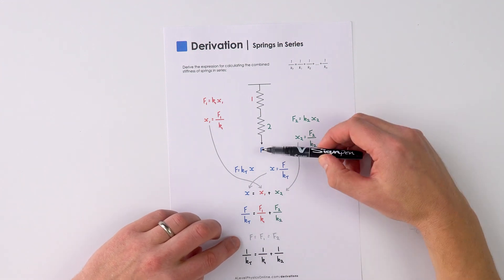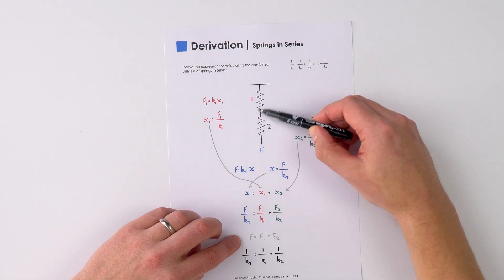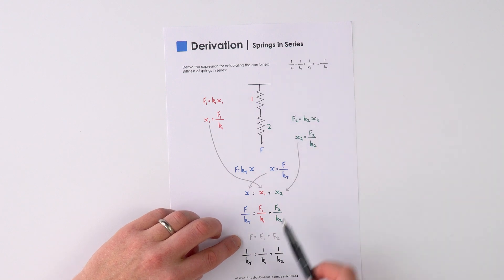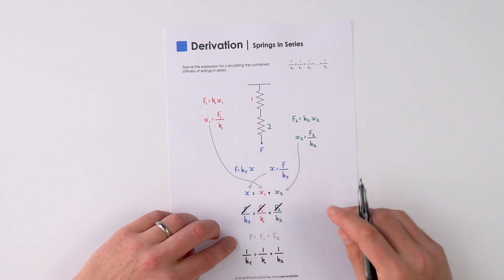Now the thing is, the force which is being applied here is going to be applied to spring 2, and exactly the same force is also going to be applied to spring 1 as well. So f is equal to f1 which equals f2, and therefore these three things here cancel with each other.